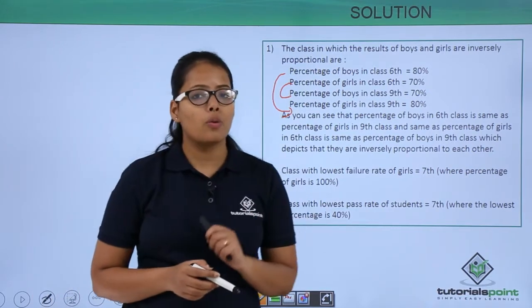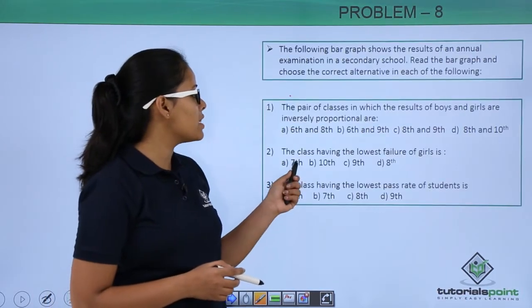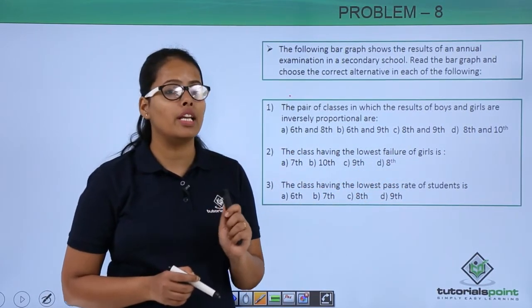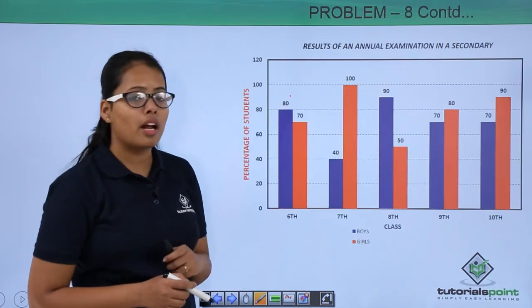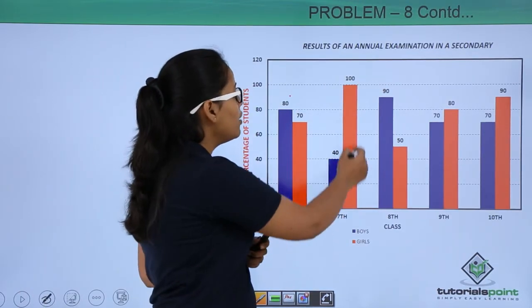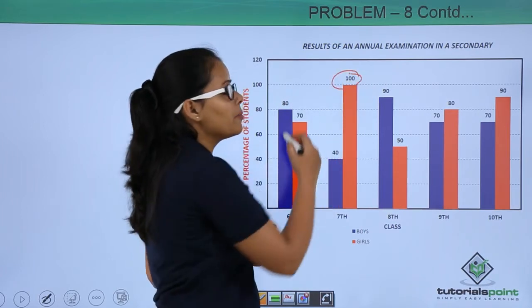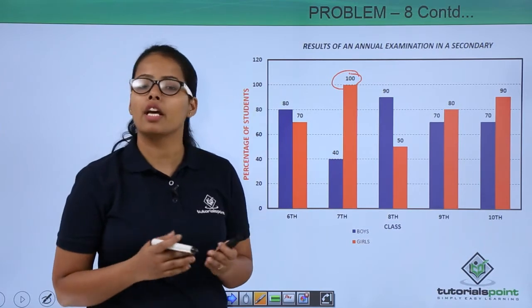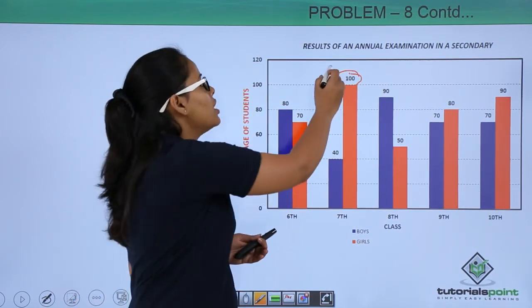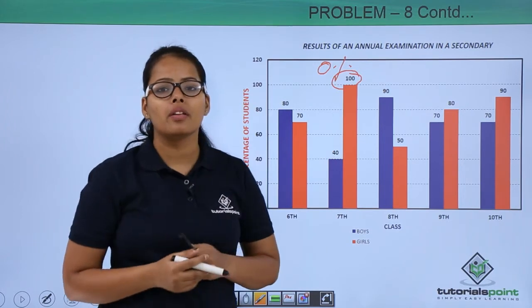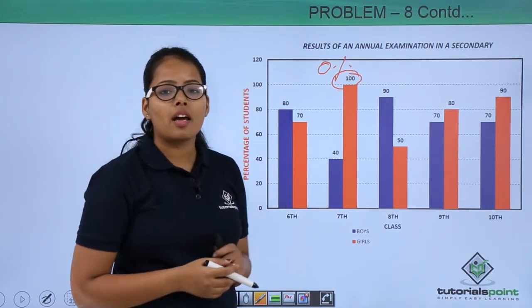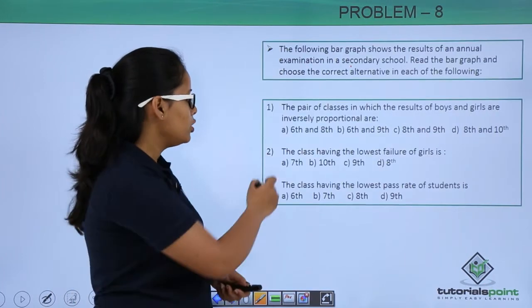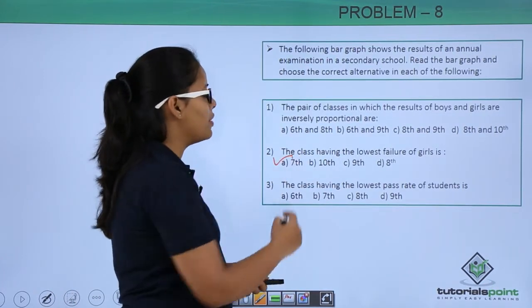The second problem asks for the class having the lowest failure of girls. Looking at the bar graph, in class 7 you can see that 100% of girls passed. When 100% of girls passed, it means all of them passed and none of them failed. So this class is the only one where the girls' passing rate is maximum and the failure rate is minimum. Therefore, the answer to this problem is class 7.